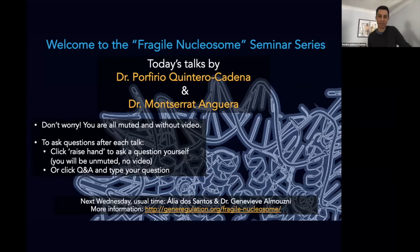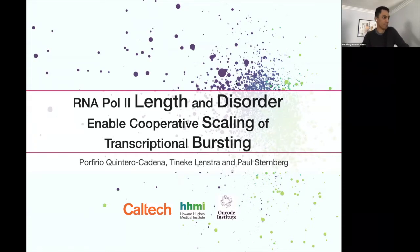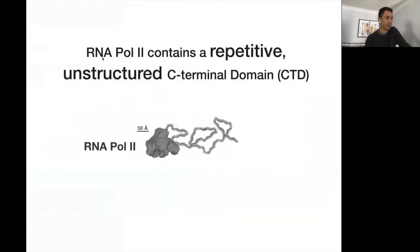So here's the title of my talk. It's a little bit long, but I hope it will make more sense at the end. I want to start with the first portion of the title, which is RNA Pol II length. This is a diagram of the RNA polymerase — the 3D structure of the holoenzyme, which has 12 subunits.